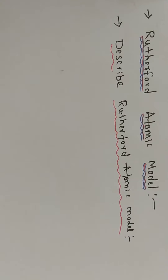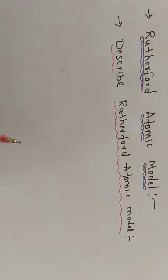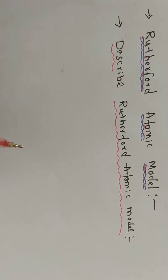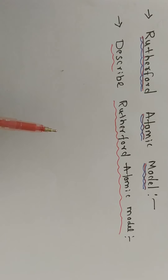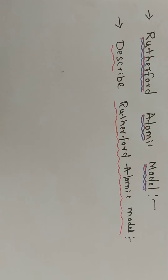This model is also called the planetary model of an atom. We call it the planetary model because electrons revolve around the nucleus, just as all planets revolve around the sun. The sun is the center point — in the atom, the center point is the nucleus — and the electrons revolve around it. So Rutherford's atomic model is also known as the nuclear model of an atom.